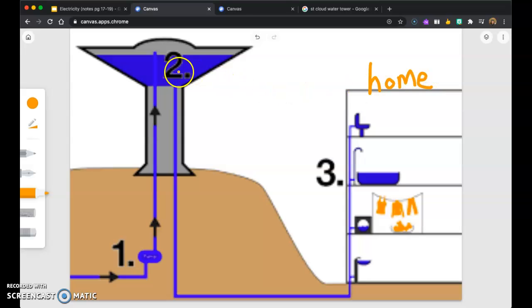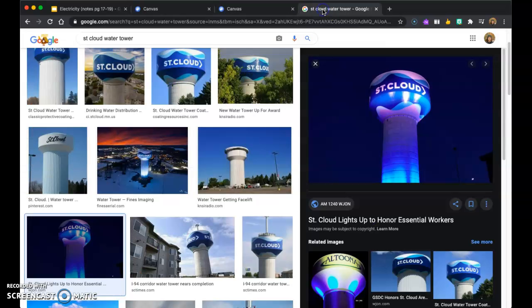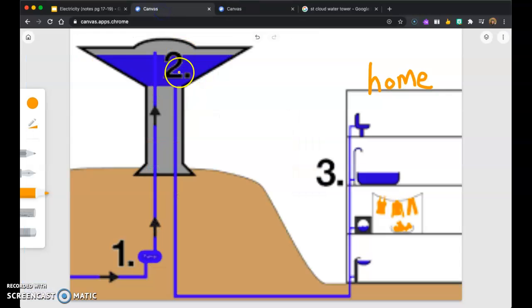And number two is your water tower that's in your city. So you might recognize this being your water tower, and maybe not like this kind of flying saucer shape, but you get the idea. This is your water tower.